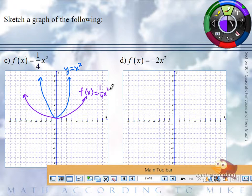In part D, two things are happening. Let's first talk about the 2. The 2 does the same thing as the 2 did before. This was a vertical stretch.